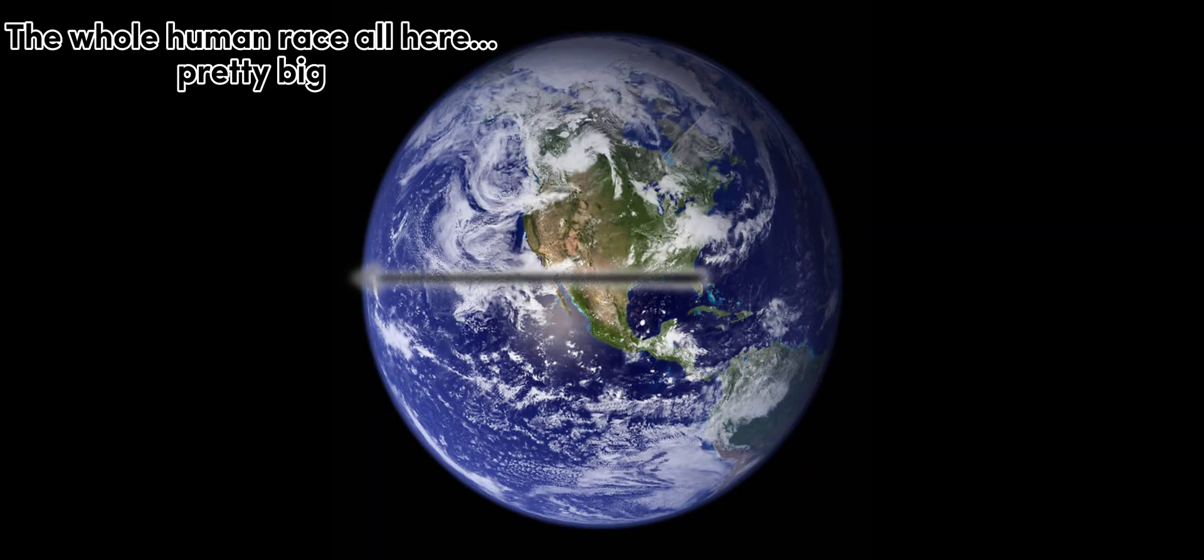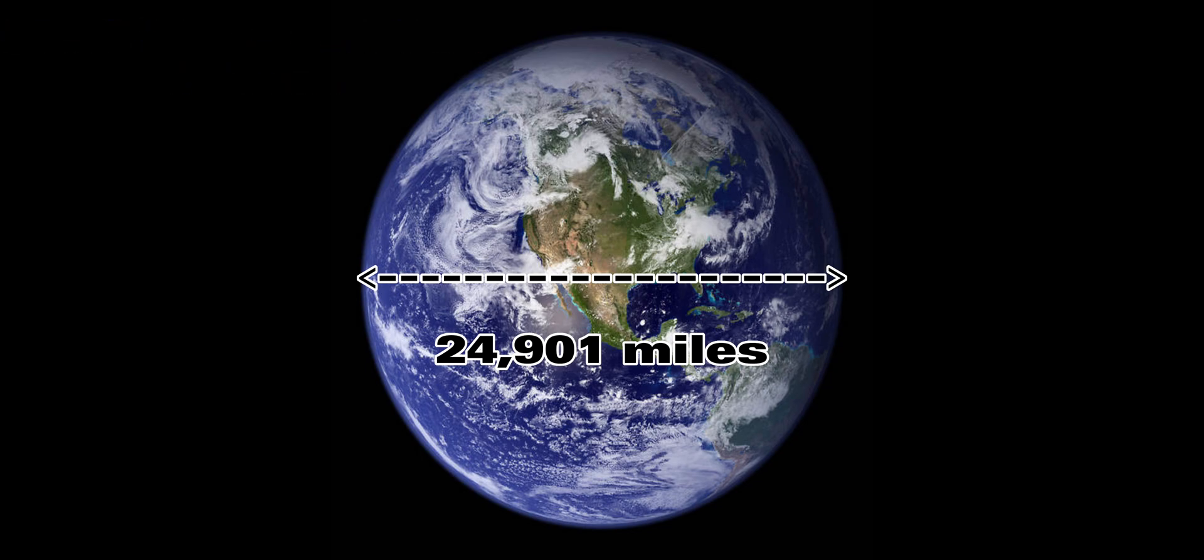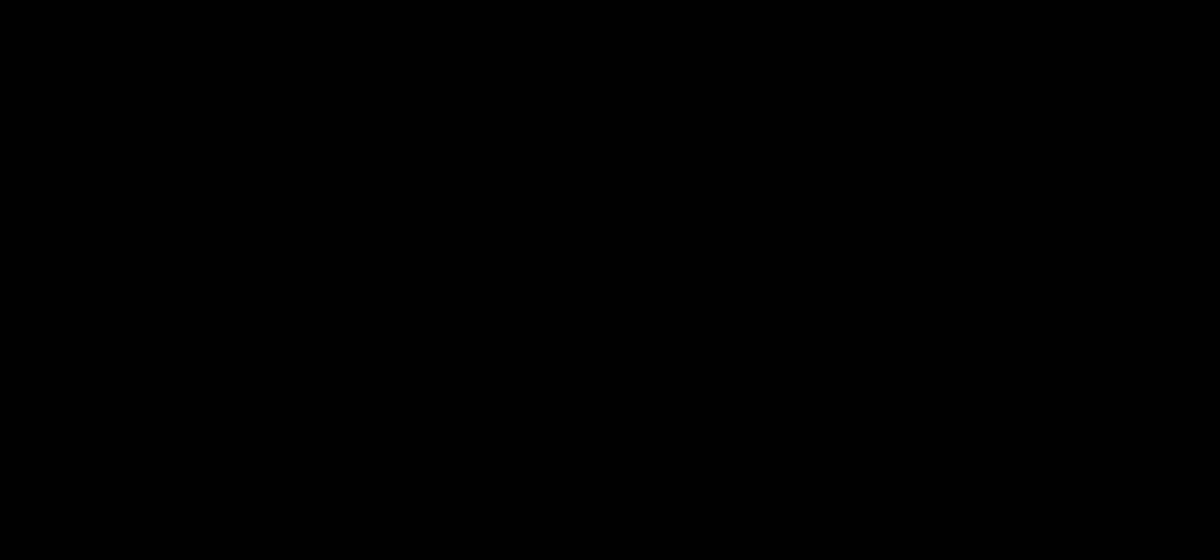Earth is big to us, about 24,901 miles in circumference at the equator. That's roughly like taking a flight from UK to America five and a half times over, which is pretty huge.